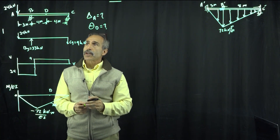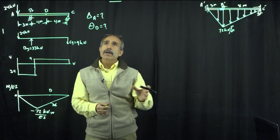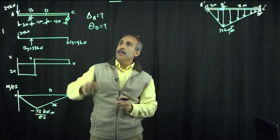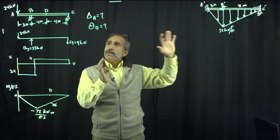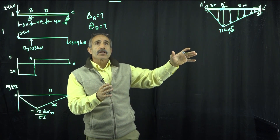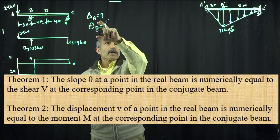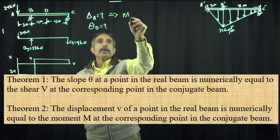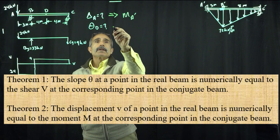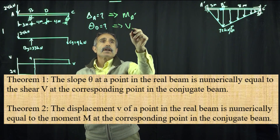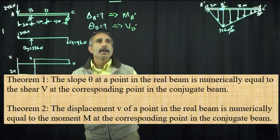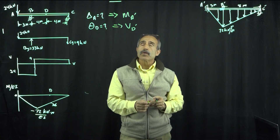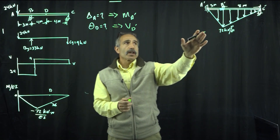We're going to use the conjugate beam method. If you look at table 7.2 on the board, we can convert this to a conjugate beam. In this conjugate beam world, our displacement is equal to the moment — that would be MA prime — and the slope will be the same as the shear at D prime. We're going to use that format and convert this beam to a conjugate beam.